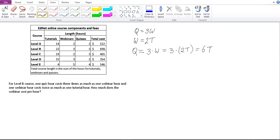You've got 22 tutorials, so 22 times T, plus you've got 3 webinars, but one webinar is 2T, so it's going to be 3 times 2T. Plus you've got 3 quiz hours, and quiz is 6T, so it's going to be 3 times 6T. That's going to equal 690 dollars.